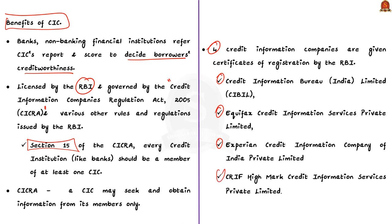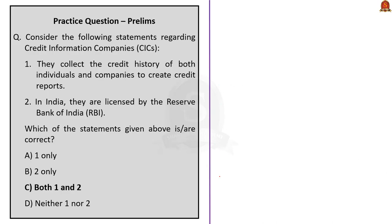The first statement: they collect the credit history of both individuals and companies to create credit reports — this statement is correct as we have seen in our discussion. Secondly, CICs are regulated by the Reserve Bank of India — this is also correct. As extra data, note that credit rating agencies, which are very different from CICs, are regulated by SEBI. So both statements are correct.